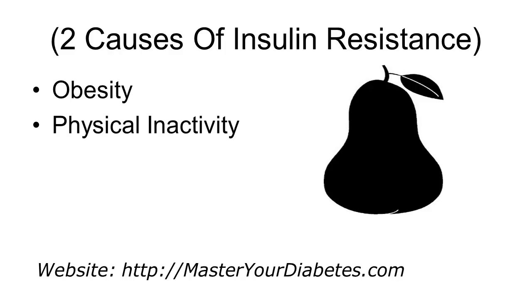Insulin resistance is usually the first thing to happen before a person becomes type 2 diabetic. And although the previously mentioned are more so risk factors, the real cause of type 2 diabetes is insulin resistance. The major causes of insulin resistance are obesity and physical inactivity, which usually go hand-in-hand with metabolic syndrome.